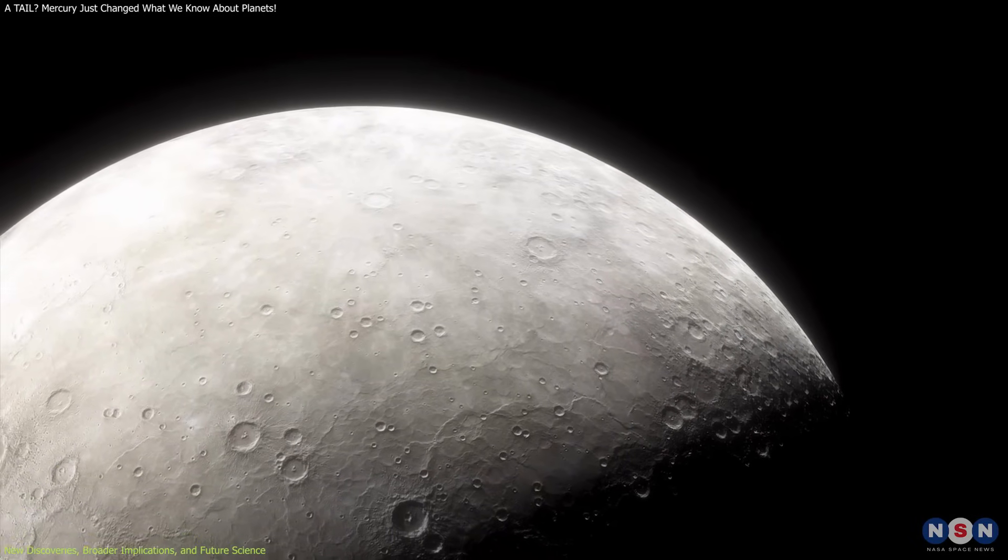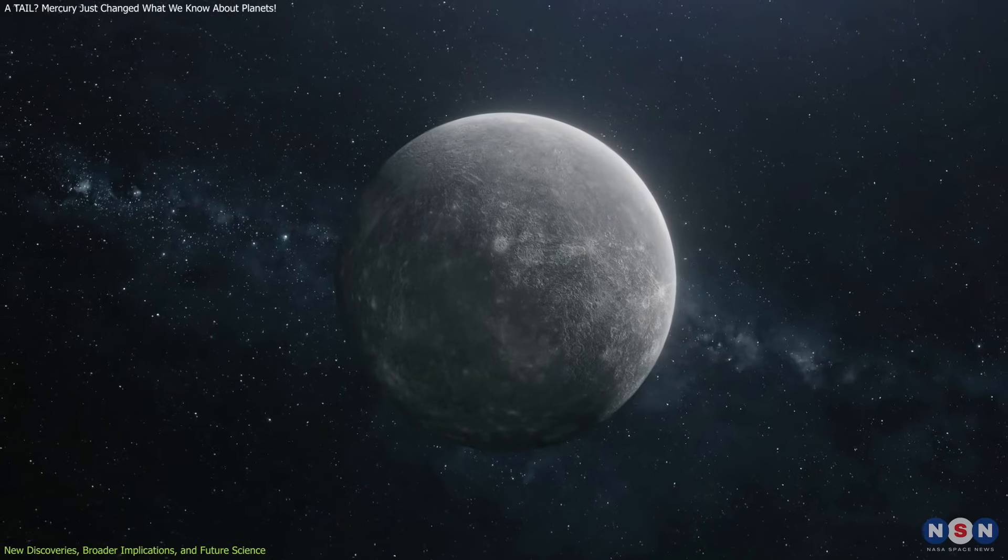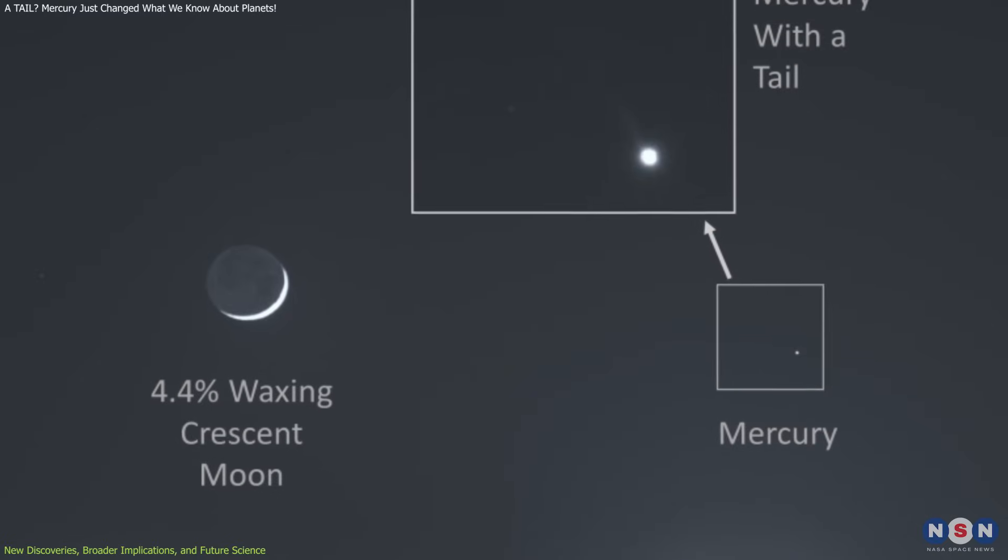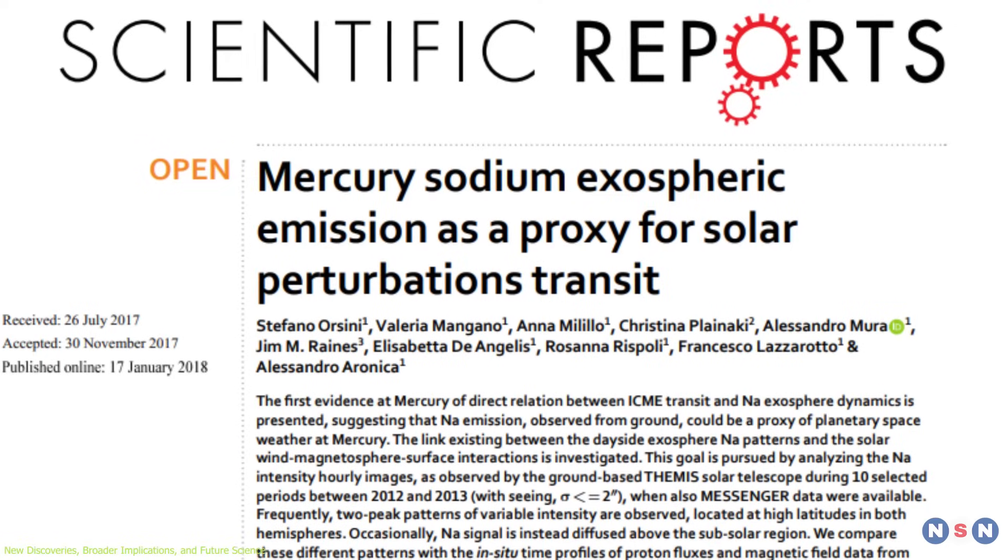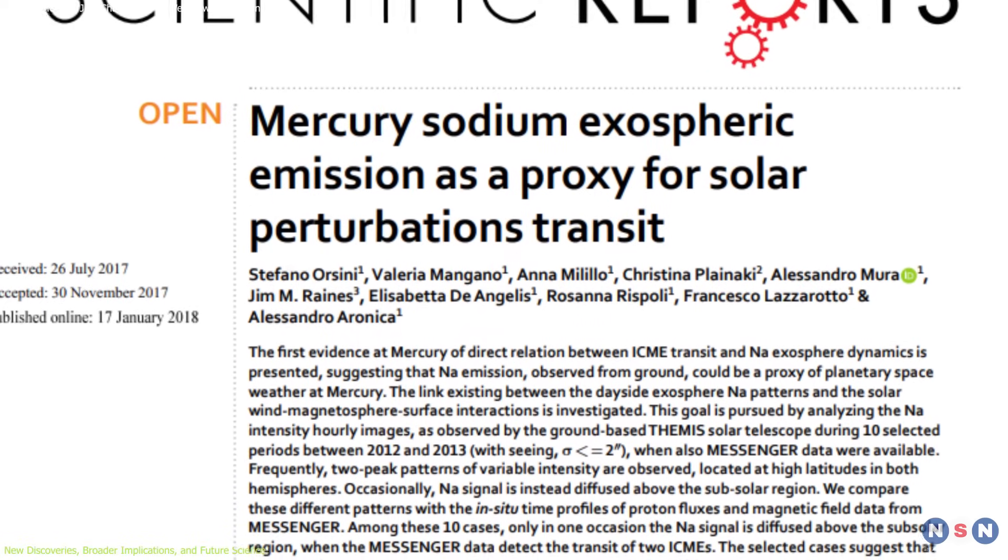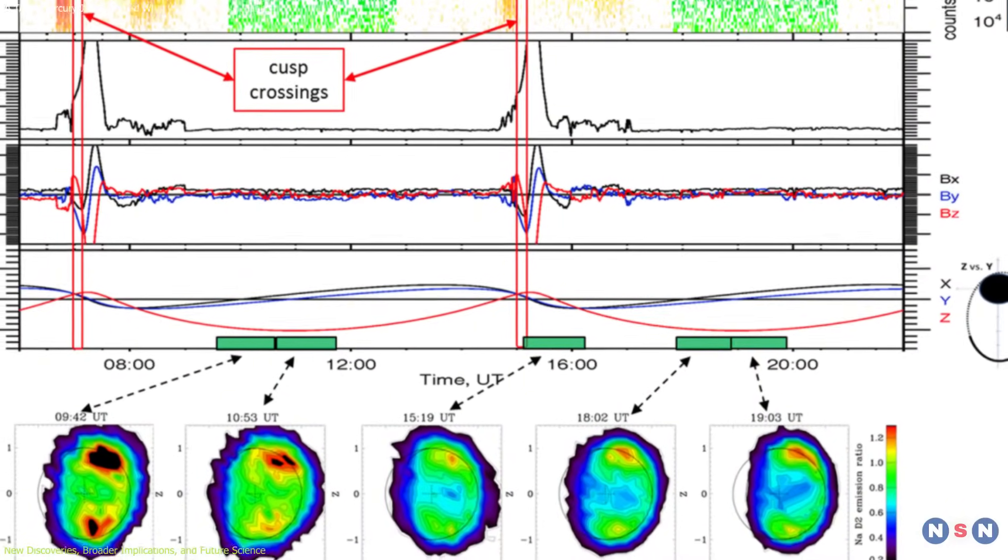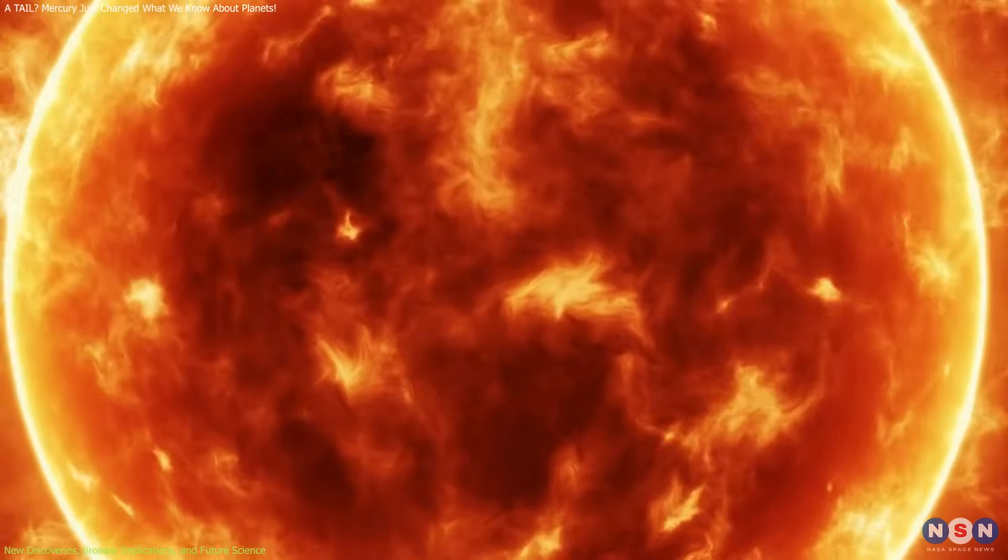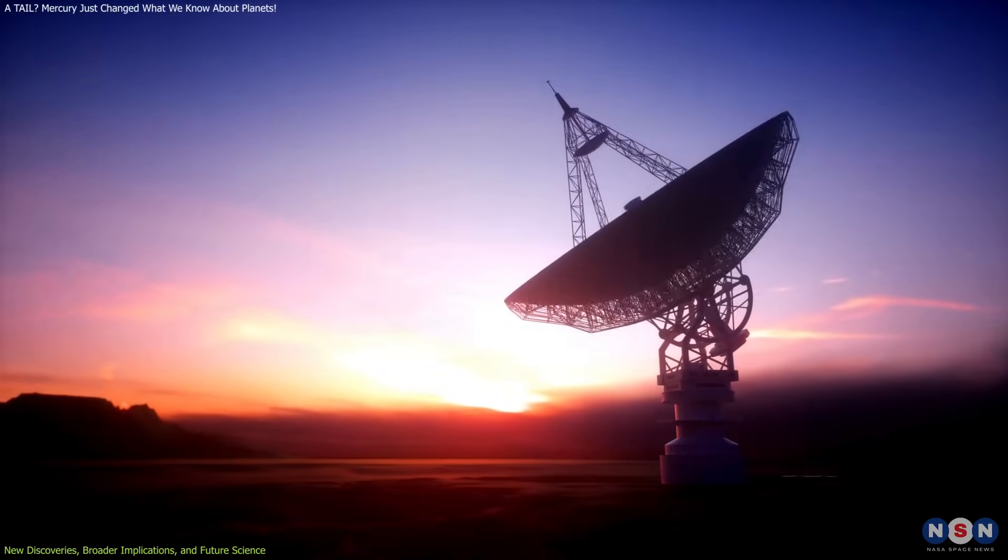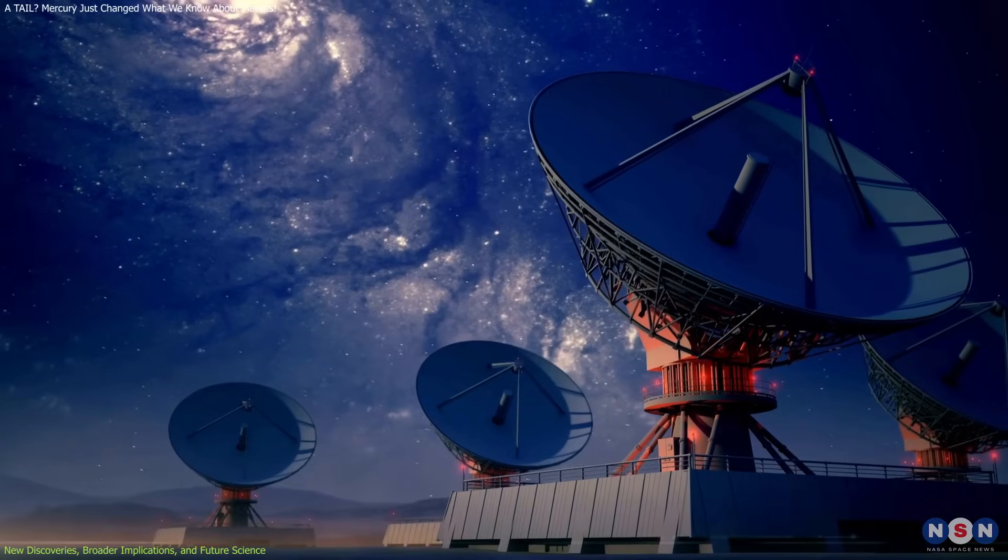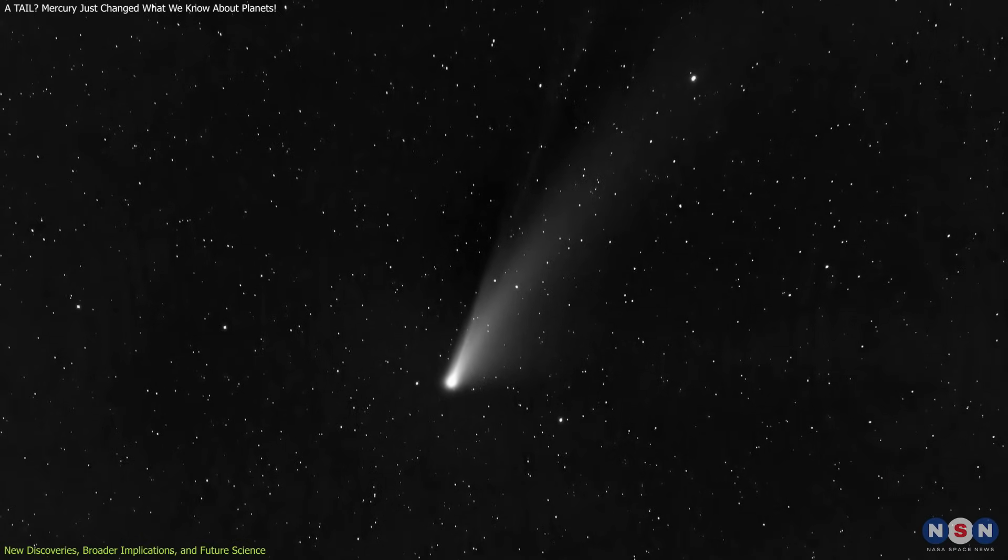Beyond Mercury's immediate environment, the implications of this discovery extend into new areas of research and understanding. One intriguing development comes from new techniques and technologies that allow scientists to study Mercury's tail in real-time and with greater precision than ever before. Recent studies have shown that changes in Mercury's sodium tail can act like a natural space weather sensor. Because the tail responds to variations in solar wind pressure and solar ultraviolet flux, astronomers can use it to monitor solar activity indirectly. These observations are supported by advancements in ground-based imaging. Telescopes using narrowband filters focused specifically on the sodium D-line can now track how the tail evolves over hours and days.